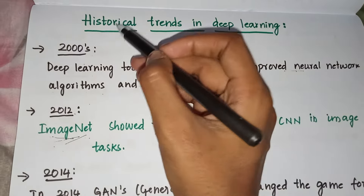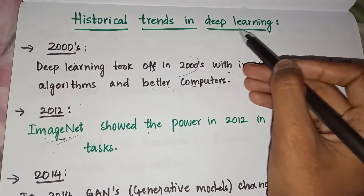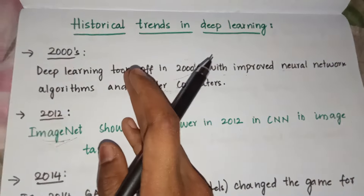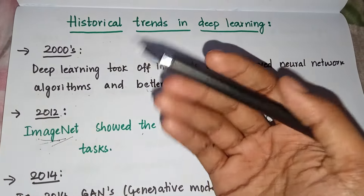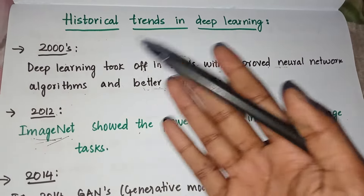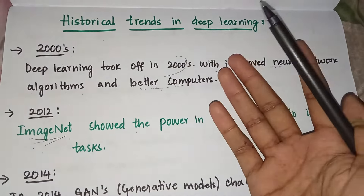Hello everyone. In this video we'll see what are historical trends in deep learning — when deep learning came into existence and what were the developments over the years.